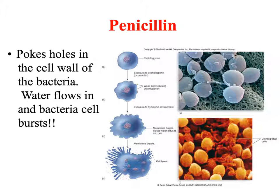Penicillin causes pathogen cells to swell by making water flow into the bacteria cell, causing it to burst and explode. There are also chemical mechanisms involved, but on a basic level, penicillin is designed to counteract and kill bacterial pathogens by exploiting osmosis.